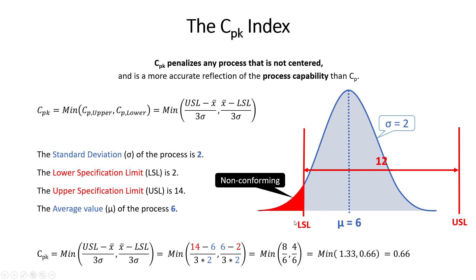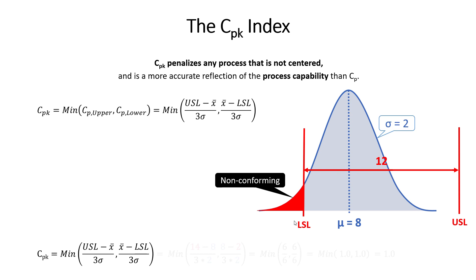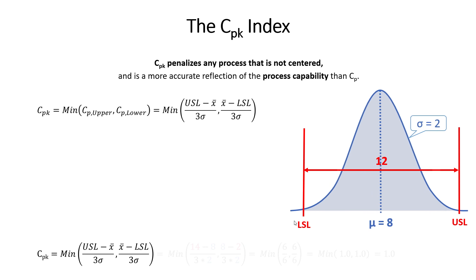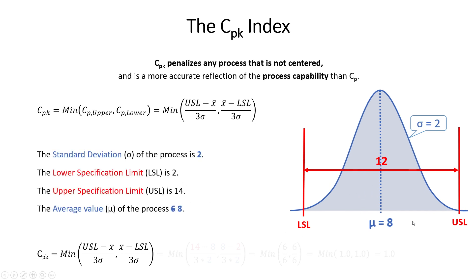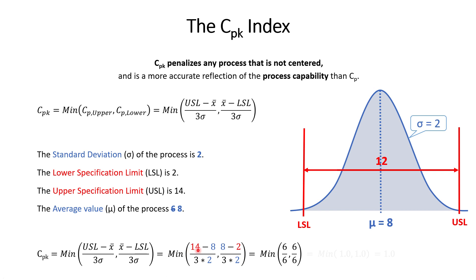Now let's see what happens to CPK when we center up our process. Everything stays the same except the mean value changes from 6 to 8. Recalculating: upper spec 14 minus mean 8, and mean 8 minus lower spec 2 — both fractions work out to 1, so our CPK value is now 1.0. This is a much more accurate reflection of true process capability.